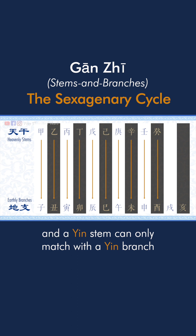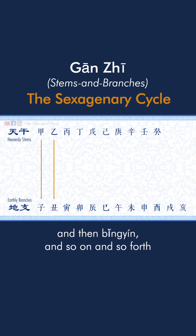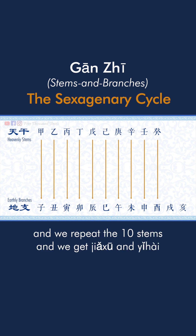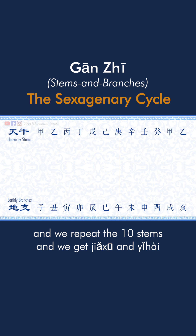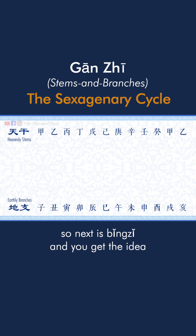A yang stem can only match with the yang branch, and the yin stem can only match with the yin branch. So after jiazi, we go to the second stem: yichou, then bingyin, and so on and so forth. Until the last stem, guiyu, we repeat the 10 stems and get jiaxu and yihai. Then we repeat the 12 branches, so next is bingzi.